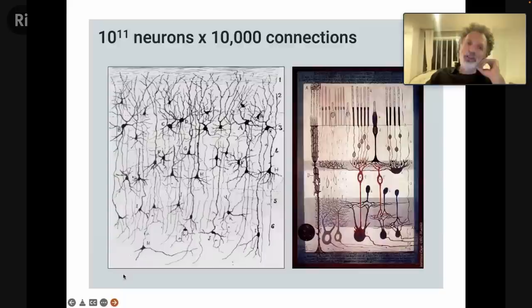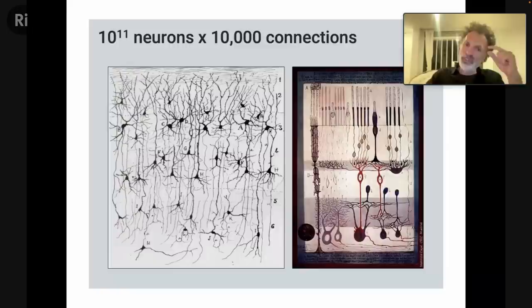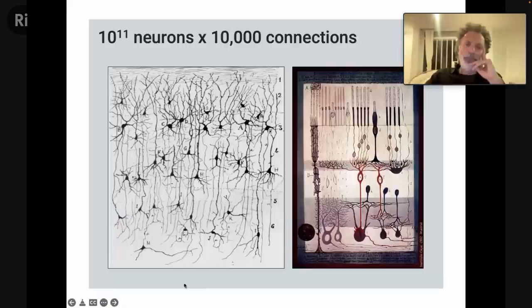On an average brain, there are about 100 billion neurons, and each one is connected to about 10,000 other neurons — so it's a massive network. On the one hand, a single neuron is like a very simple switch. But at the same time, it's a massive network with different kinds of neurons, families of neurons, beautifully portrayed by the anatomist Ramón y Cajal. We think about this massive network as helping us accomplish all these complicated things.